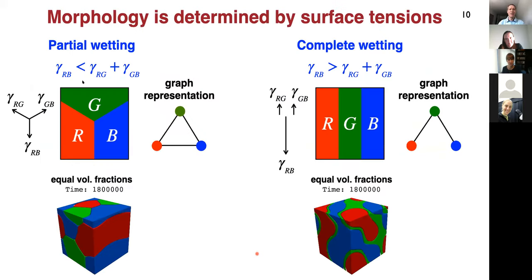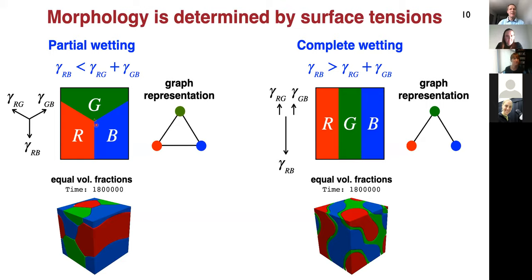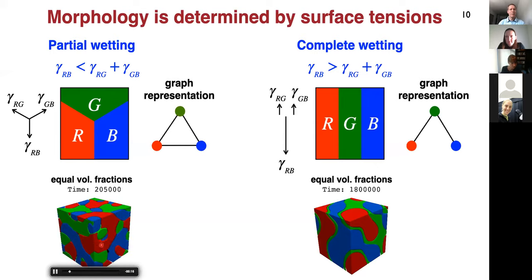We would like to know what determines these morphologies. What is really important are surface tensions. Depending on the magnitude of surface tensions, we have so-called partial wetting or complete wetting regimes. If surface tensions all obey the triangle inequality — such that each surface tension is smaller than the sum of the other two — then we're going to have stable triple junctions, where surface tensions pulling in different directions form a force balance. Running the simulations, we see that these triple junctions are quite stable and persist.